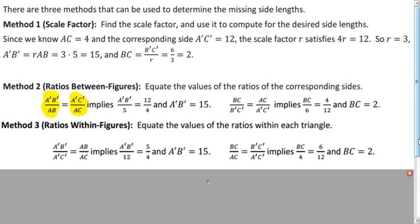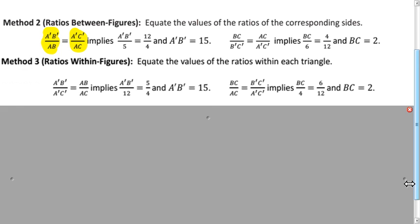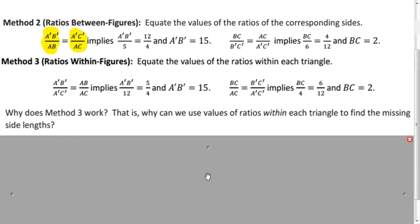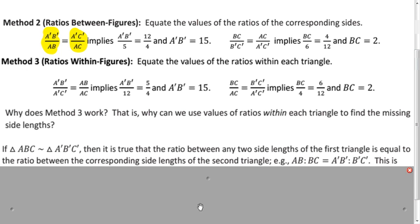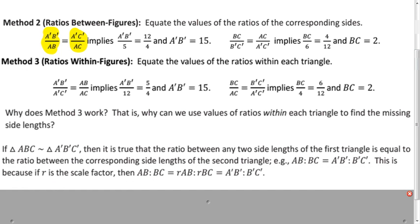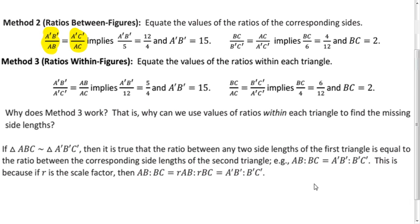So, why does this work? Why can we do this? Well, think about it. If we have a ratio relating two lengths within the same triangle — for example, AB and BC — we can multiply that fraction, that ratio, by R divided by R, because that's just one. We know R isn't zero, so we can do that.